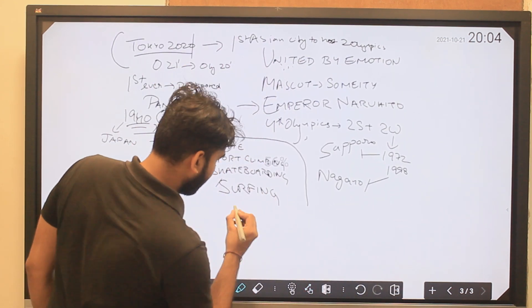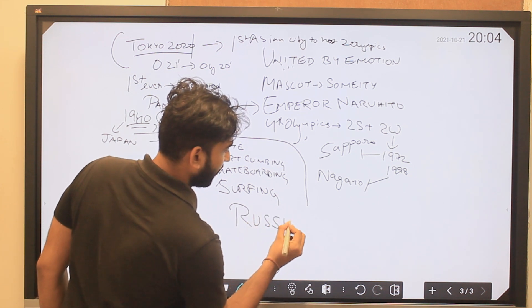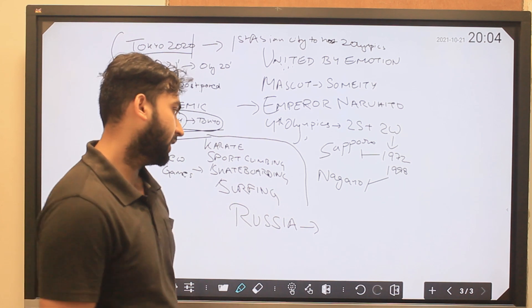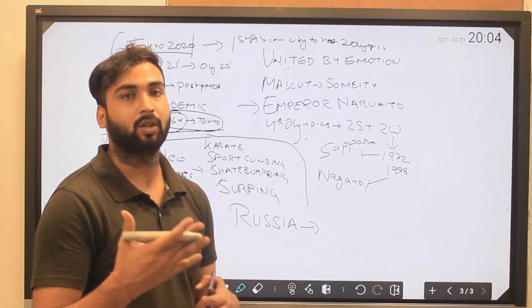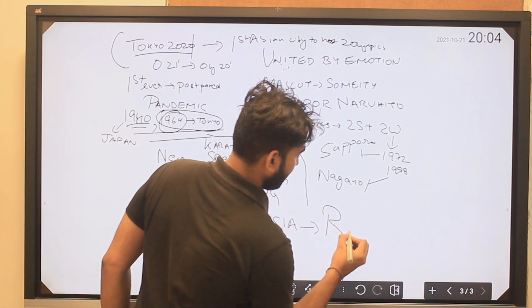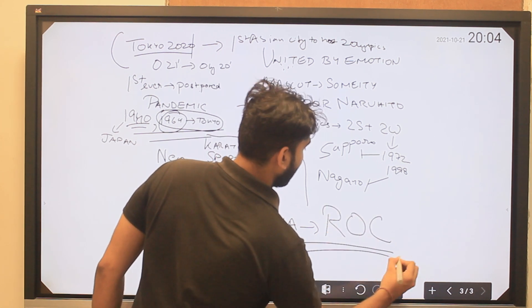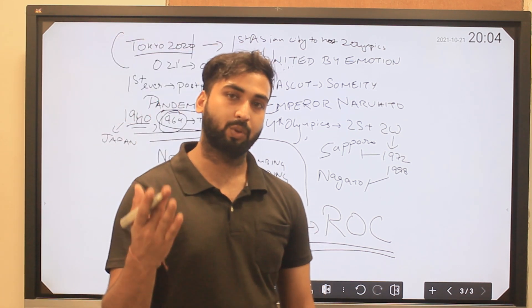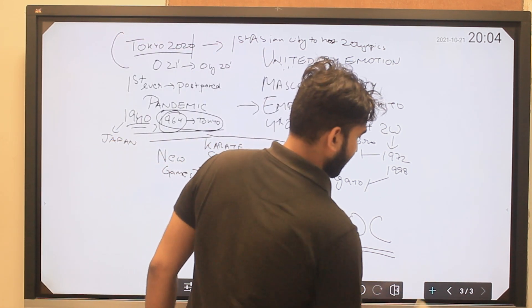Russia has been banned from the Olympics, but Russia's contingent was given a chance to participate under the name ROC — the Russian Olympic Committee.